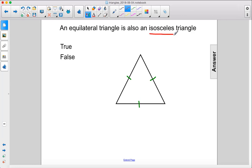Now an isosceles triangle is a triangle that has at least two sides equal, so one, two. Whether or not this third side is equal does not matter. This is an isosceles triangle because at least two sides are equal.